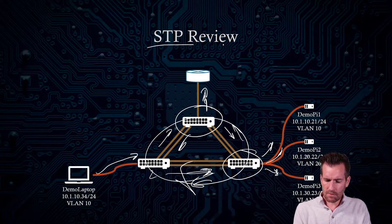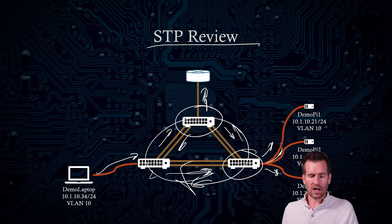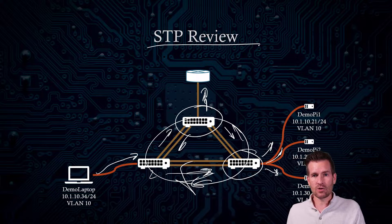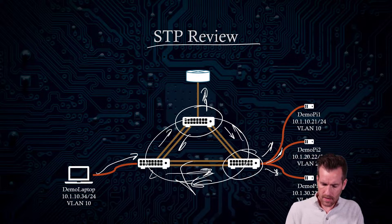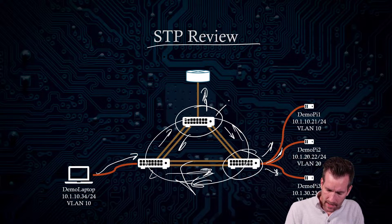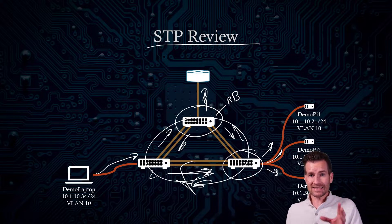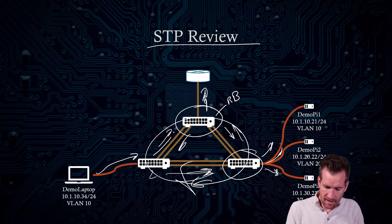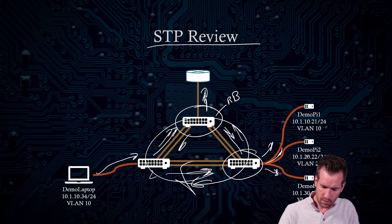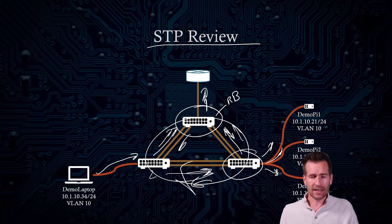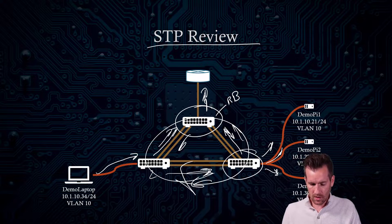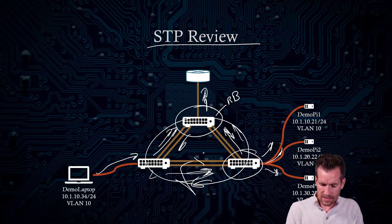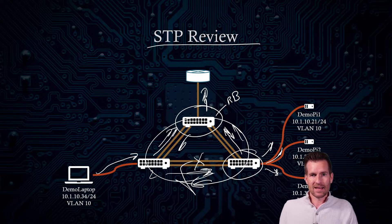The Spanning Tree Protocol uses a Spanning Tree algorithm that elects a root bridge, and then based off of that root bridge, it finds the fastest path or the path with the least cost to the root bridge and shuts down all other paths.